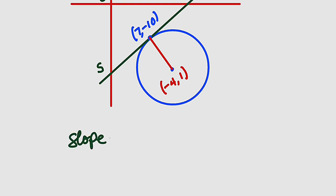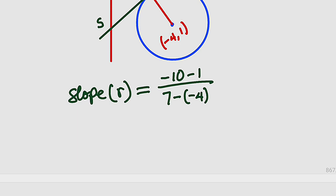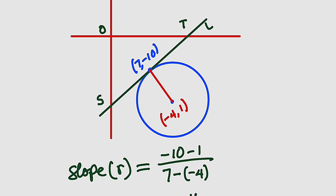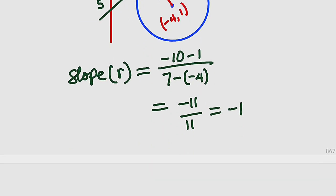The slope of the radius is given by (y₂ − y₁) / (x₂ − x₁). Taking (7, −10) and (−4, 1): the numerator is negative 10 minus positive 1, which is negative 11. The denominator is 7 minus negative 4, which is positive 11. This gives us a slope of negative 1. So if the slope of the radius is negative 1, the slope of the tangent line will be the negative reciprocal of negative 1.